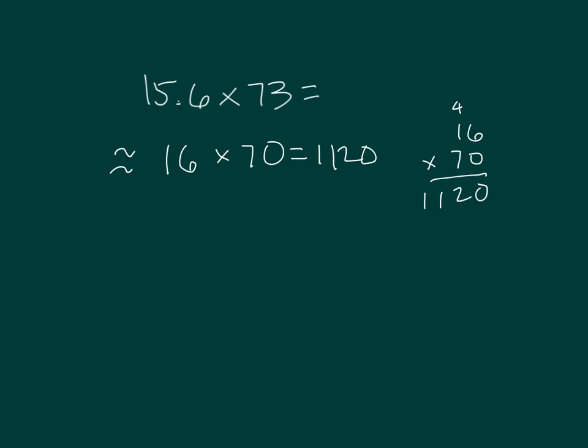Let's do our standard algorithm first this time. That's 156 tenths when we rename it, times 73. 3 times 6 is 18, 8, regroup of 1. 3 times 5 is 15, plus 1 is 16, 6, regroup of 1. And 3 times 1 is 3, plus 1 is 4.